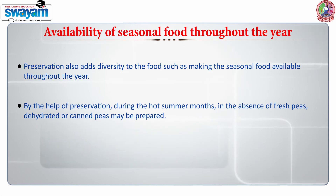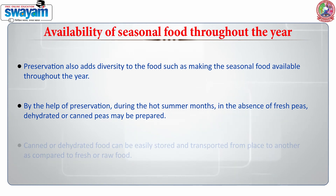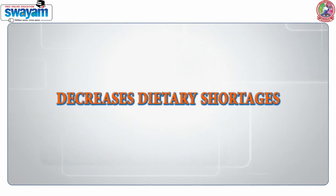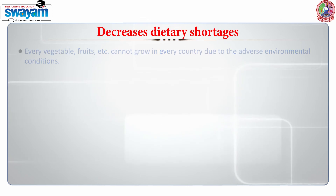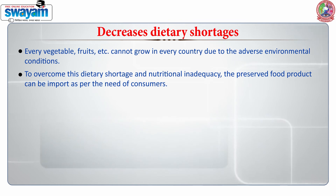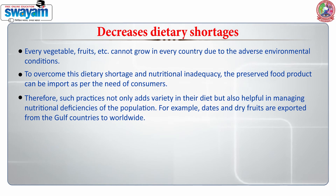During hot summer months, in the absence of fresh peas, dehydrated or canned peas may be prepared. Canned or dehydrated food can be easily stored and transported from one place to another compared to fresh or raw food. Not every fruit or vegetable can grow in every country due to adverse environmental conditions. To overcome dietary shortage and nutritional inadequacy, preserved food products can be imported as per the needs of consumers.